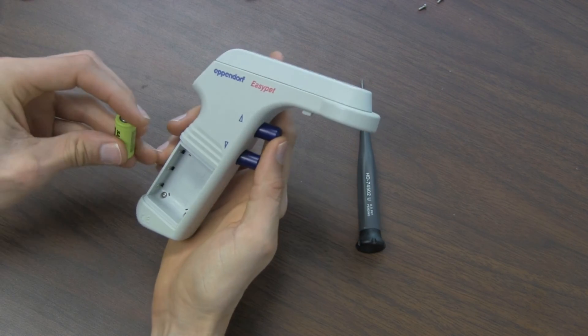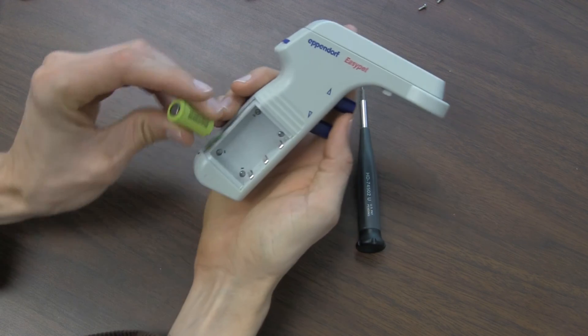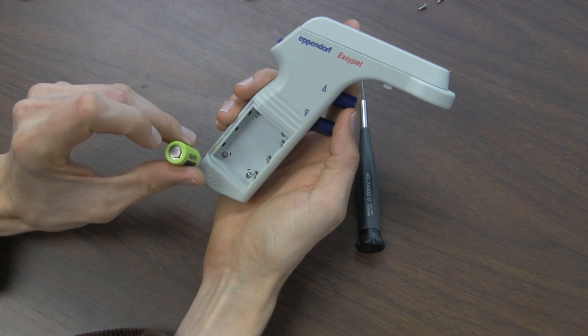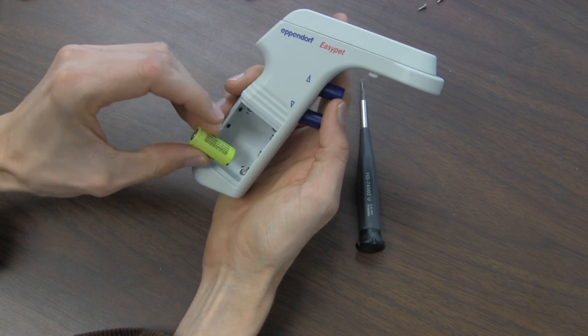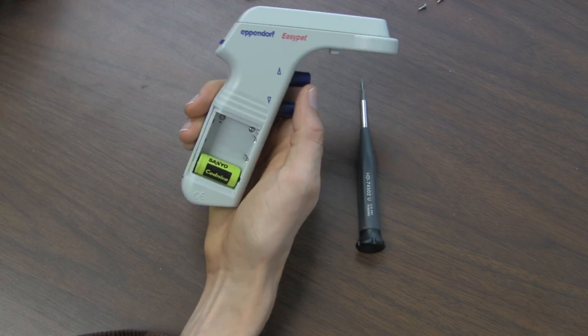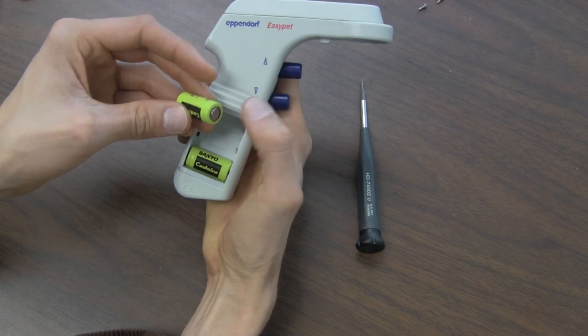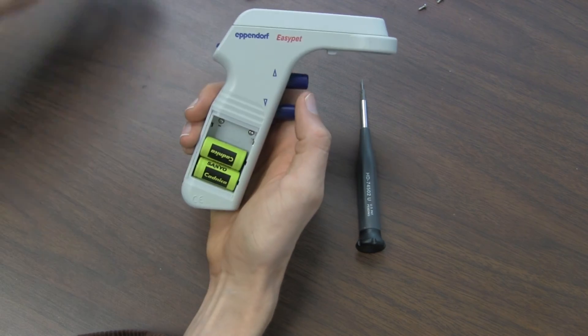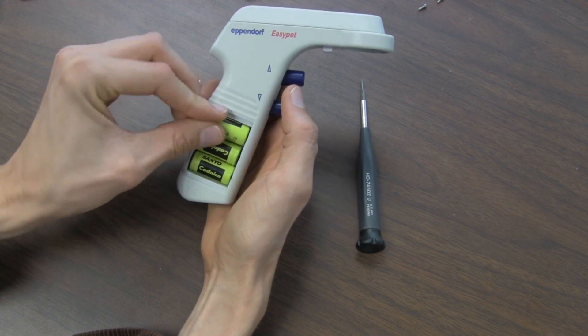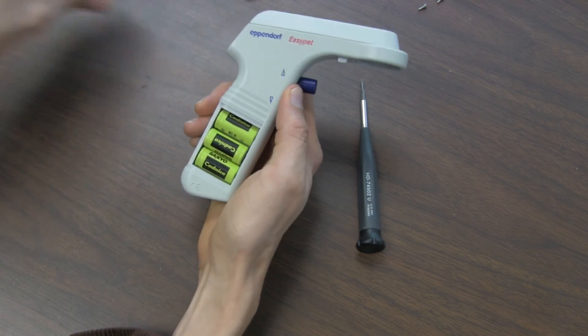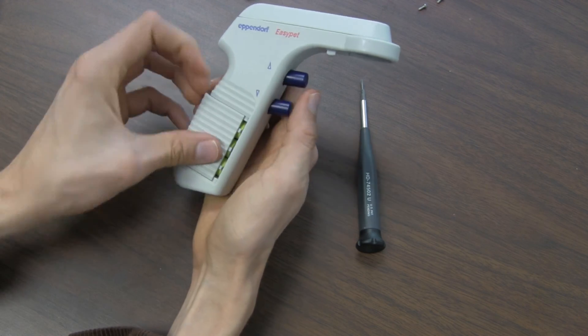And then you can put the batteries back in. Make sure that you look at the polarity in here. This small tip goes on the left side for the bottom one, on the right side for the middle one, then on the left side again for the top one. And put the battery compartment back on.